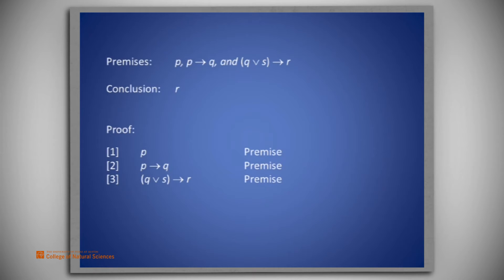Now, we see from the first premise that P is true, and from the second premise, P implies Q. So using our rule modus ponens, we can conclude Q. That's line 4, Q is obtained using modus ponens from lines 1 and 2.